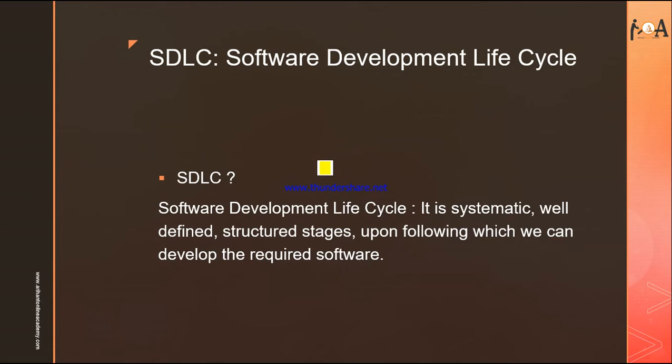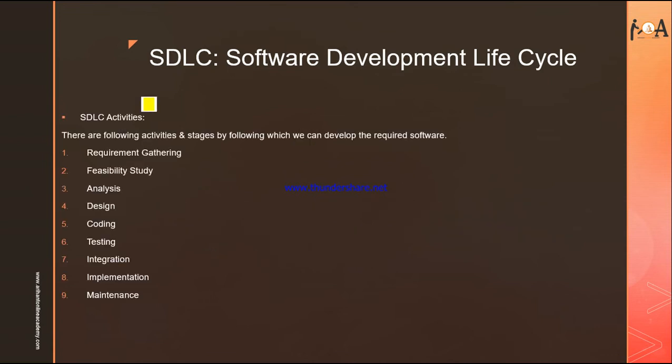Suppose we want to develop a software — which stages do we have to follow so that, in the final stage, the software we get should be reliable and should work according to the needs of the user or client? For that, well-structured, well-defined stages are made. This complete process is called the Software Development Life Cycle.